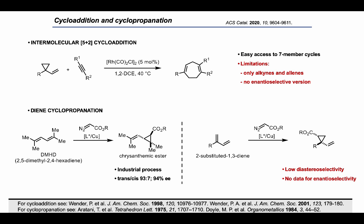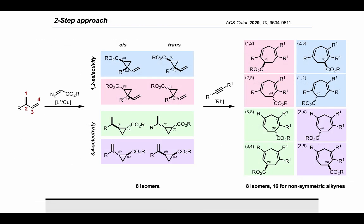Selectivity always represents a challenge in the development of synthetic methods, and this is even more true when it needs to be controlled over several steps. Such is certainly the case of our intended two-step approach. In branched 1,3-dienes, both the 1,2 and the 3,4 double bond can undergo cyclopropanation, thus leading to differently substituted VCPs, or even to double cyclopropanation products. In each cyclopropane ring, the configuration of the newly introduced group can be either cis or trans to the vinyl. The total number of isomers must also be doubled if we want to account for enantioselectivity, and this is just the first step.